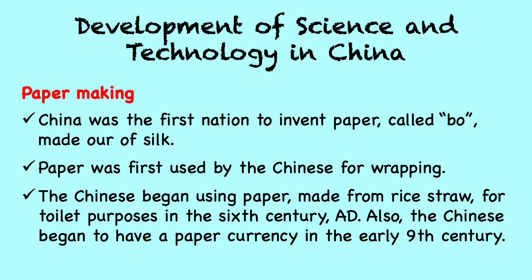China's civil service officials needed lots of paper to do their work, so paper gradually became mass-produced in government factories. The Chinese began using paper made from rice straw for toilet purposes in the 6th century AD, and they began to have paper currency in the early 9th century. At the beginning of the 3rd century, the papermaking process first spread to Korea and then to Japan. It reached the Arabs in the Tang Dynasty and Europe in the 12th century, and in the 16th century it also went to America by way of Europe, then gradually spread all over the world.